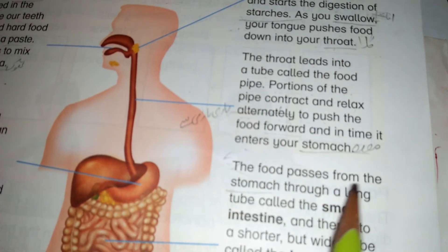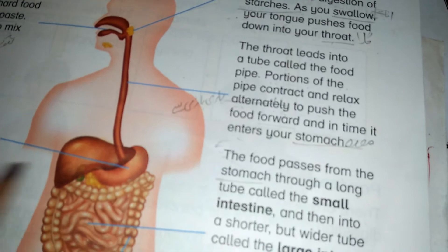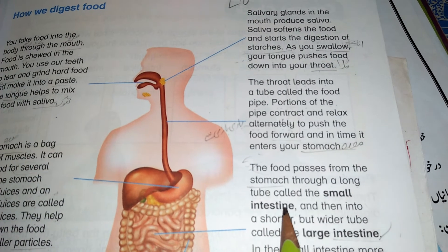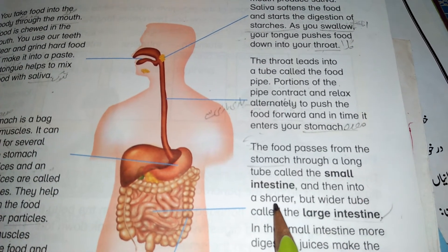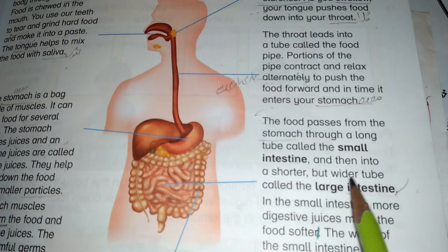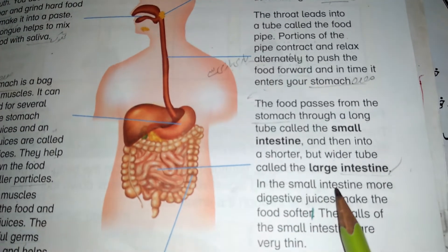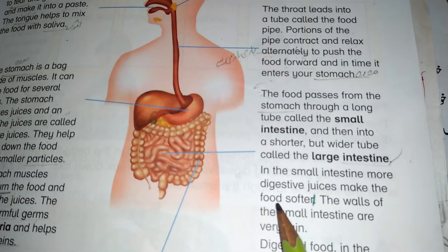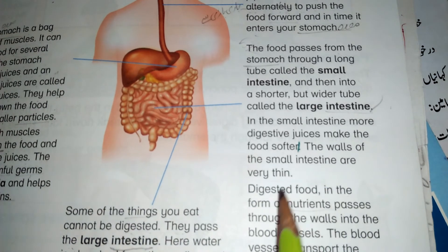The food passes from the stomach through a long tube called the small intestine, and then into a shorter but wider tube called the large intestine. In the small intestine, more digestive juices make the food softer. The walls of the small intestine are very thin.